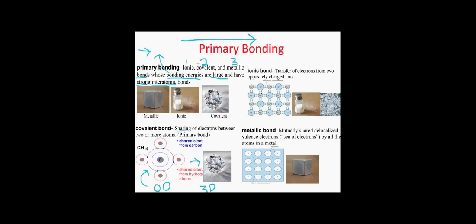Our next type of bonding is ionic bonding, which involves a transfer of electrons between two oppositely charged ions. Here we have sodium chloride, or table salt. Sodium becomes sodium plus one, and chlorine becomes chlorine minus one. The sodium donates an electron to the chlorine; they become oppositely charged ions, and the attraction between them holds the bond together. Remember: ionic bonds equal a transfer of electrons.